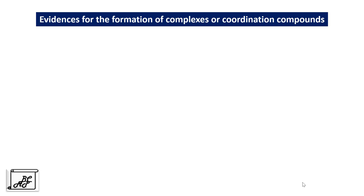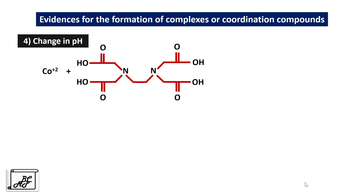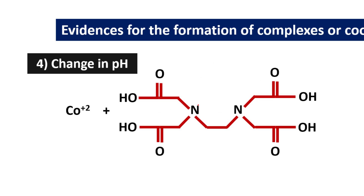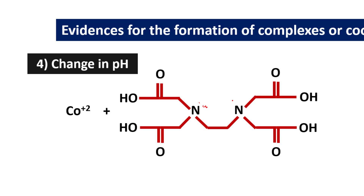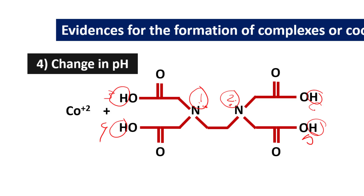The fourth evidence is change in pH. Here I will take the example of cobalt salt. To this cobalt salt solution, if we add EDTA, which is a hexadentate ligand — hexadentate means there are six points of attachment. In this EDTA ligand, one nitrogen has a lone pair of electrons and another nitrogen also has a lone pair of electrons, giving the first and second points of attachment. In addition to this, there are four hydroxyl groups with four oxygens that can bind to the central metal atom as the third, fourth, fifth, and sixth points of attachment.